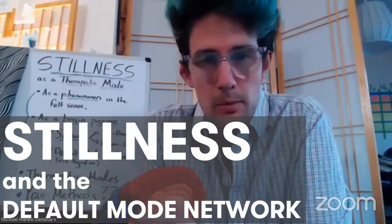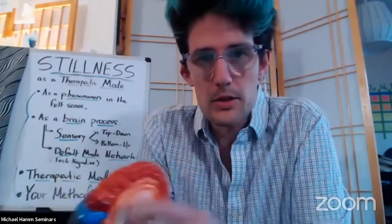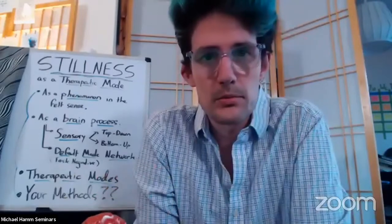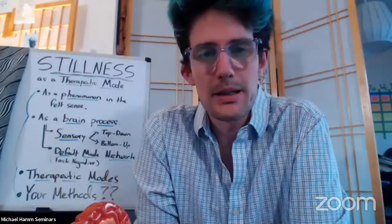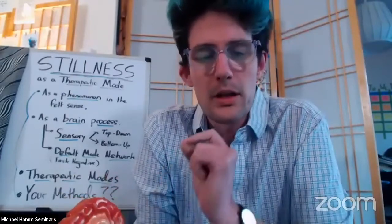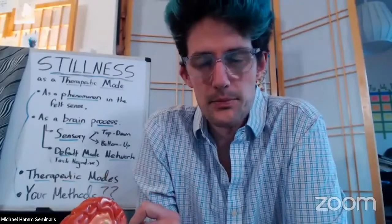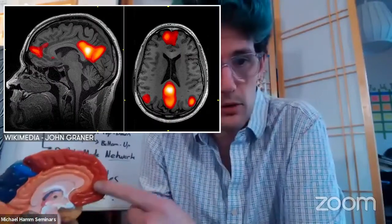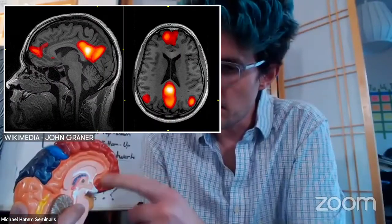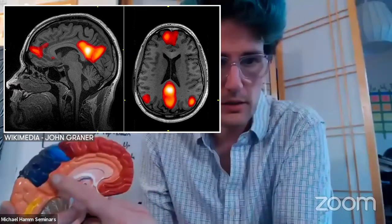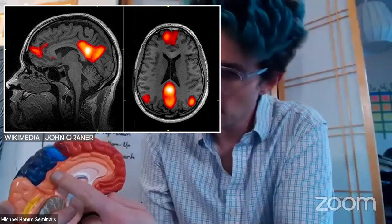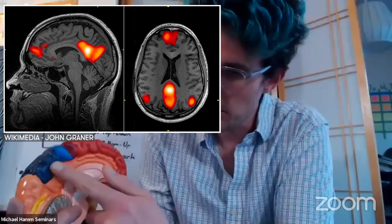If you put someone in an fMRI and you're measuring glucose metabolism and blood flow in the brain during a moment when they are not engaged in a task, you see the activation of a brain network with some major purchase in the medial prefrontal cortex, the posterior cingulate cortex, and the precuneus in the parietal lobe.